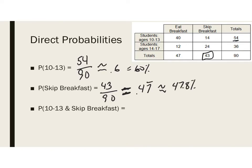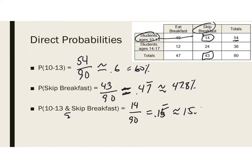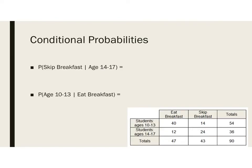For '10-to-13 AND skip breakfast,' we look at the intersection: 14. So that's 14 out of 90, which equals 0.15 repeating, or approximately 15.6%.